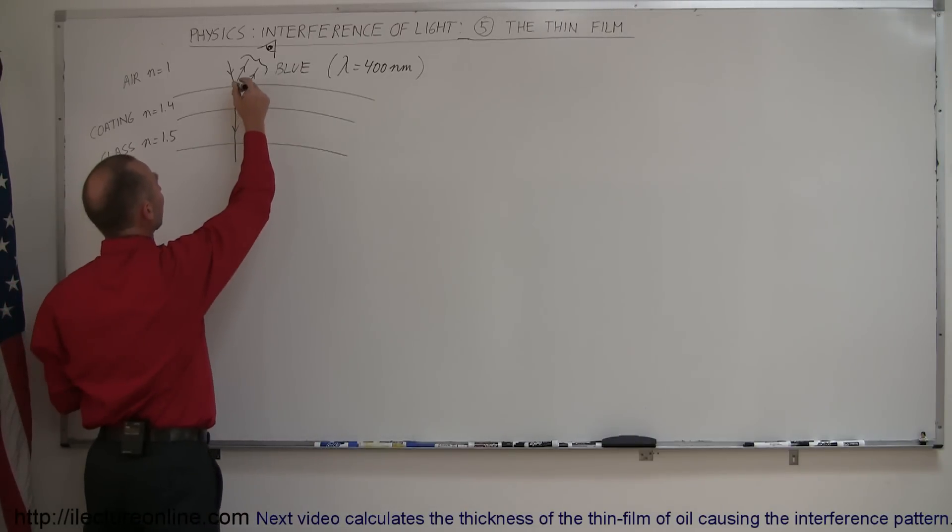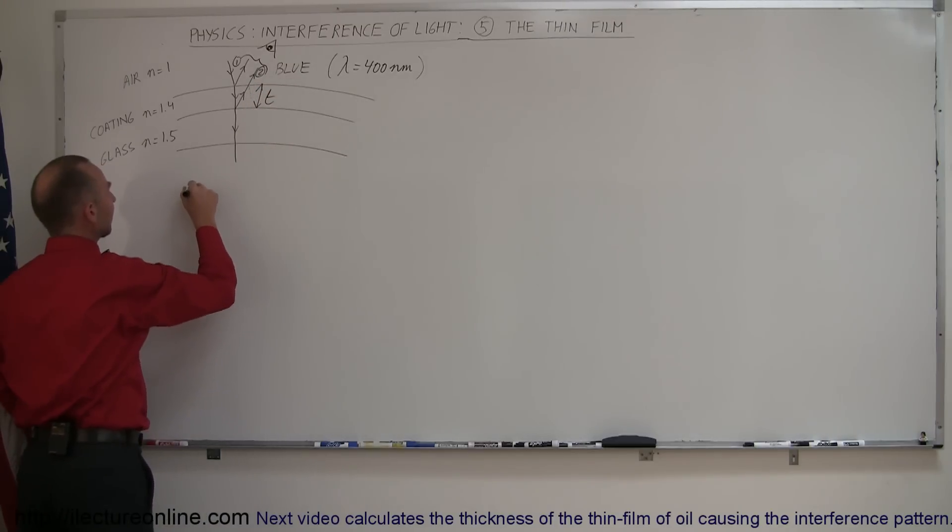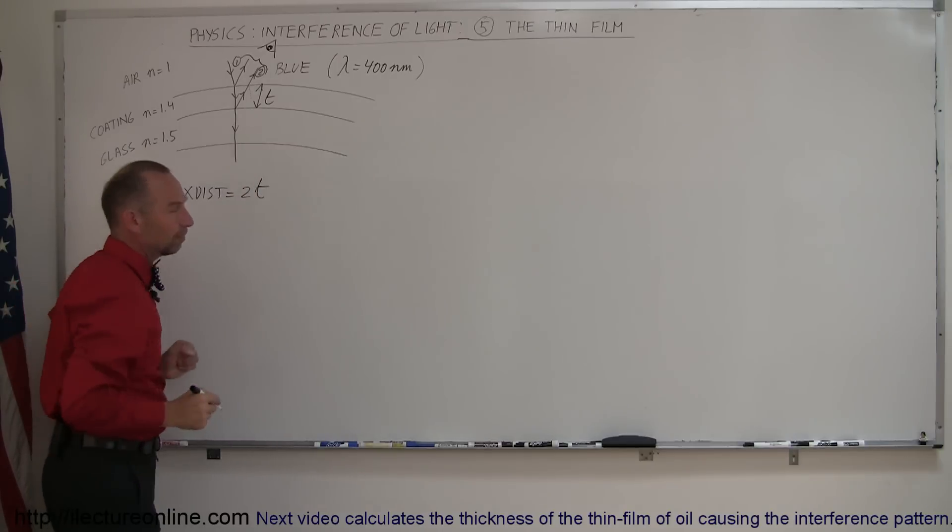The extra distance traveled by the second ray, this is the first ray, this is the second ray being reflected. You can see that it has to travel through the film and back through the film this way. And if the thickness of the film is t, then we can see that the extra distance traveled is equal to two times the thickness of the film.